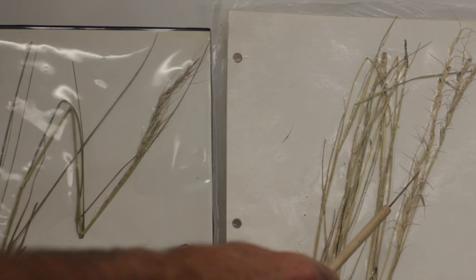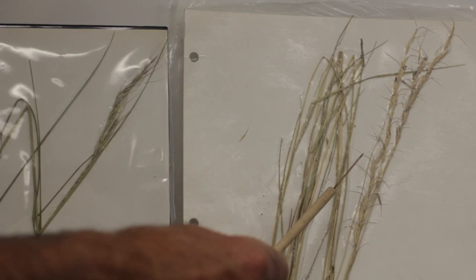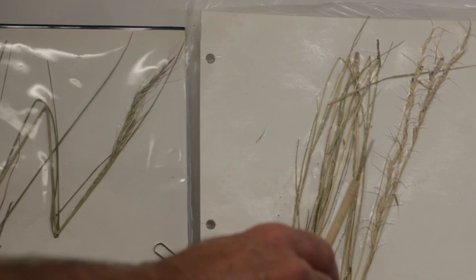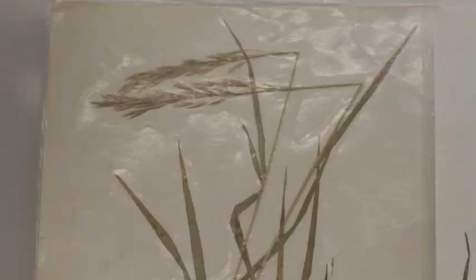The awns are bent over in an arc and one awn goes in this direction and one awn goes in that direction, so it's not twice bent over. It's got multiple spikelets per floret whose awns are bent in divergent angles. This one has a single floret per spikelet. So this is green needle grass and this is blue bunch wheat grass.